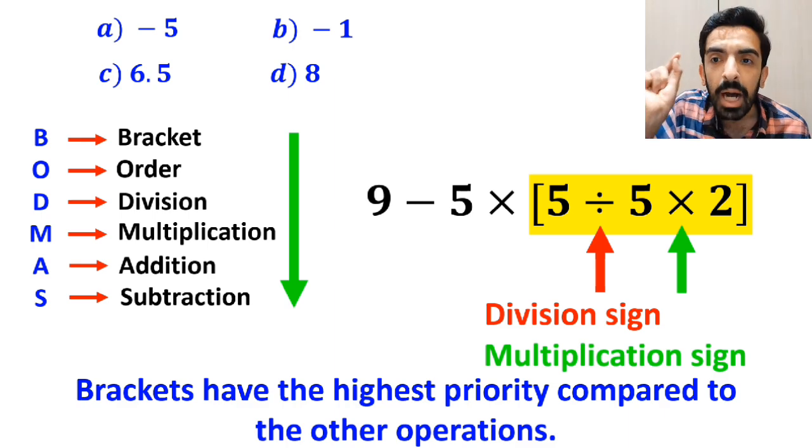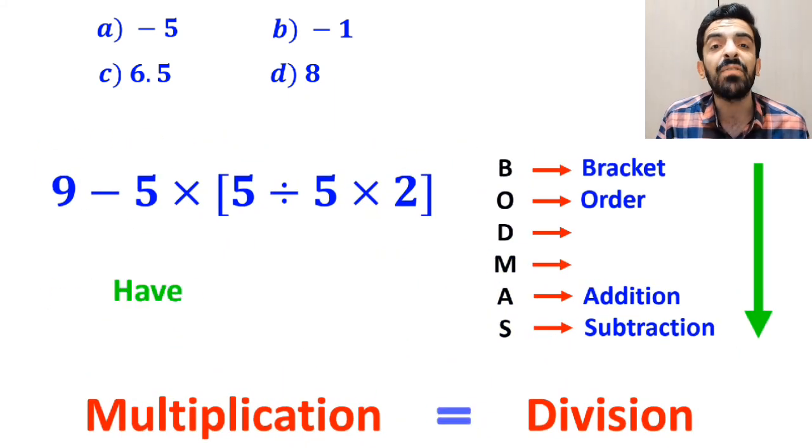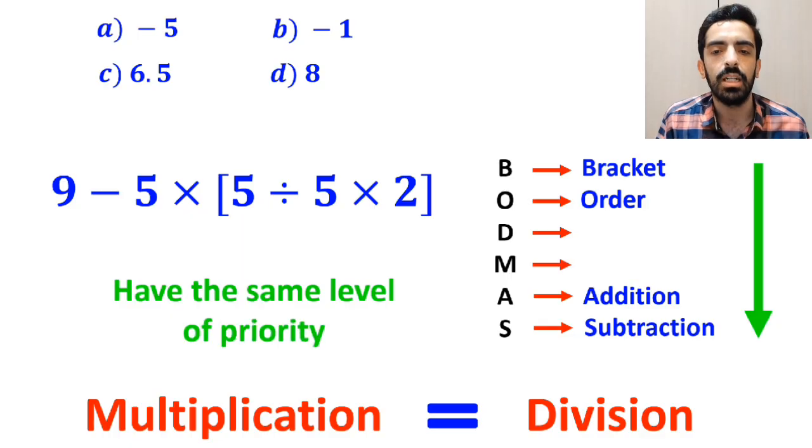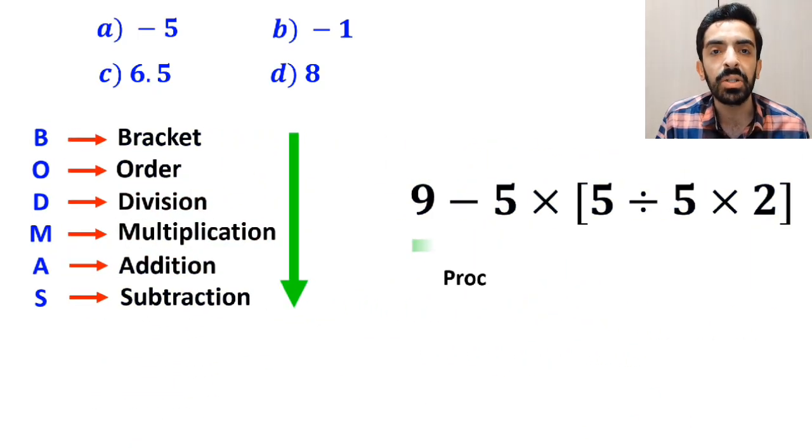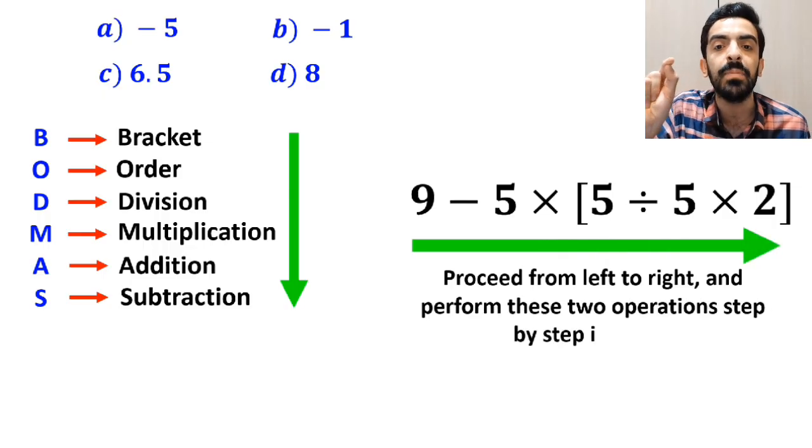It's very important to keep in mind that according to the BODMAS rule, multiplication and division have the same level of priority. So, the best thing to do here is to proceed from left to right and perform these two operations step by step in order.